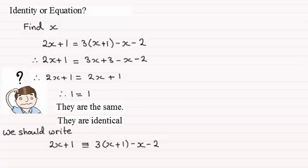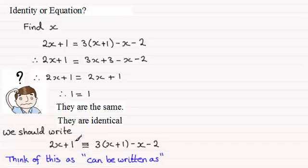And we should write this as 2x plus 1 and we introduce this symbol here. It's the identity symbol. Think of this as can be written as. So we've got 2x plus 1 is identical to or can be written as 3 lots of x plus 1 then minus x minus 2.